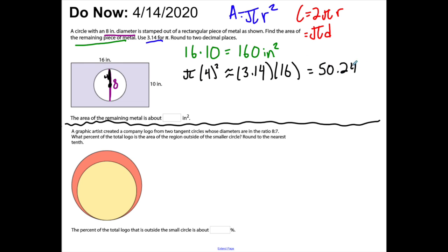Presumably that's also inches squared. To get the remainder, I'm going to take the entire area of the whole rectangle and subtract out 50.24.